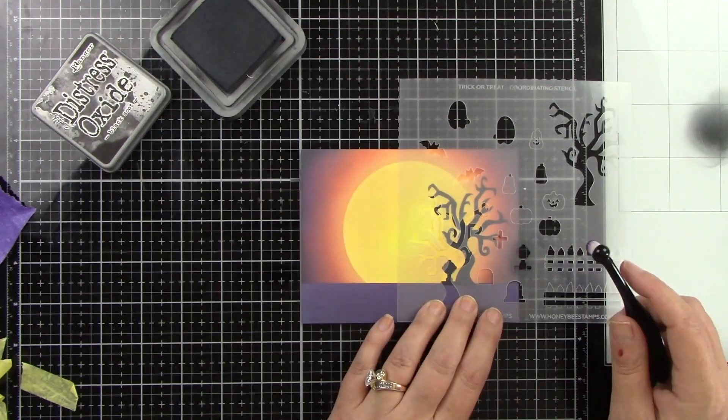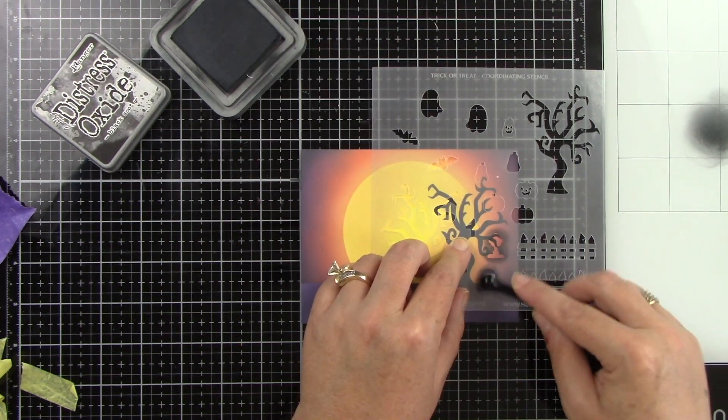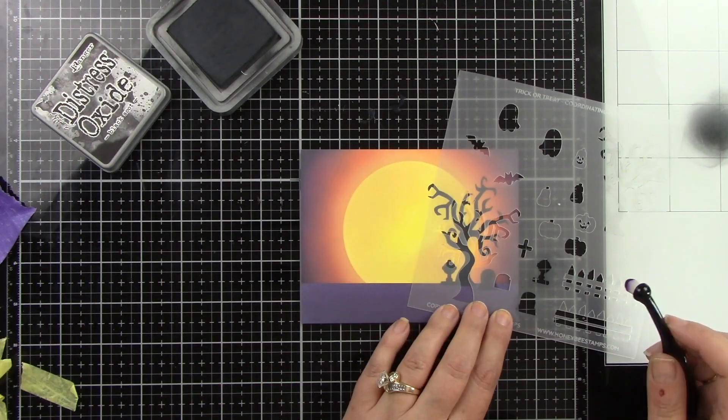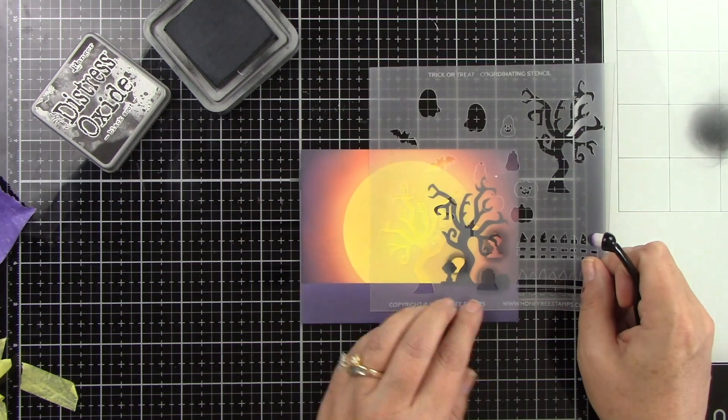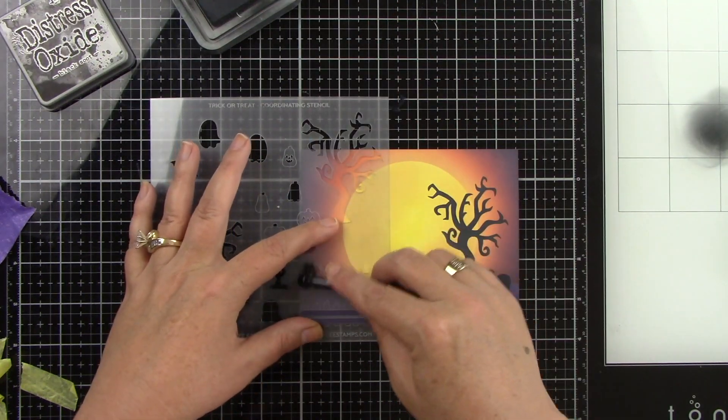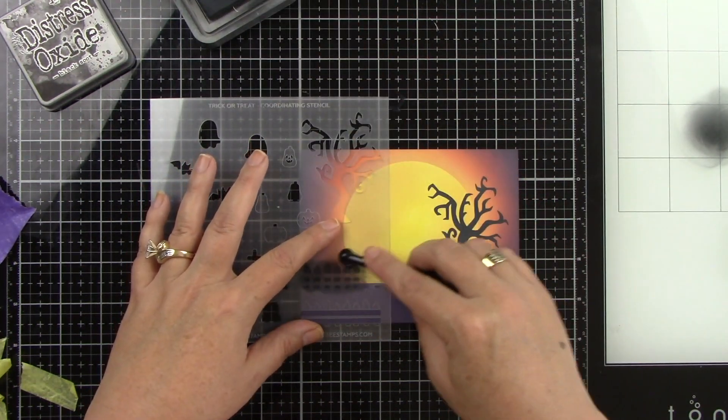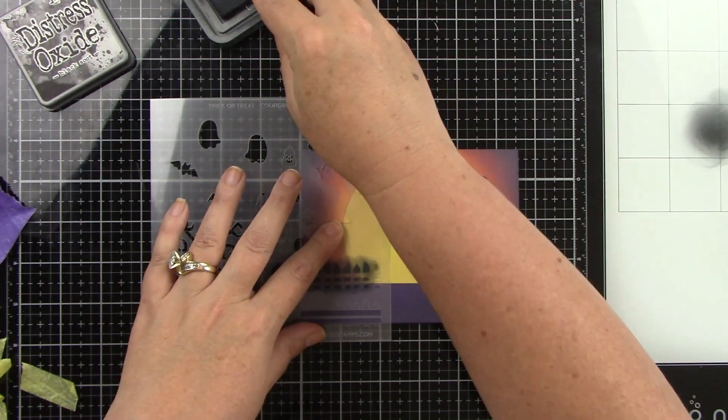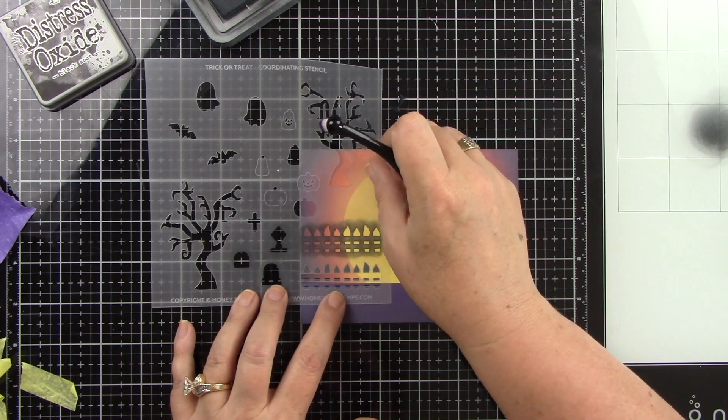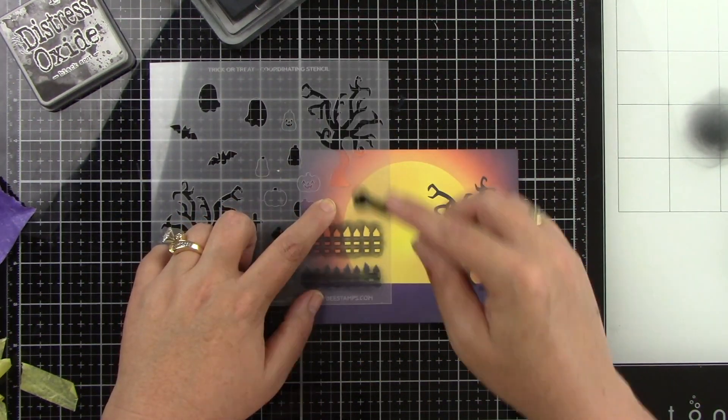It's going to be all over the ground and some of them I'm going to tilt sideways. Some of them are going to be straight up. I'm using this really tiny detail blender brush from Honey Bee Stamps and that is perfect for these little tiny images. I don't even have to tape anything off because I'm not going to over stencil. I am going to stencil the fence on the left side and there's two pieces to the fence. Super easy to stencil. I did the upright pieces of wood and now I'm going to do the horizontal pieces of wood.